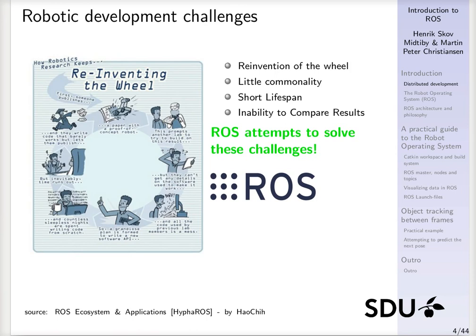The basic issue with how robotic development has been running earlier is demonstrated in the circle over here, where someone publishes a paper about a robot and some software they have made. Others find this of interest and would like to redo some of the experiments or maybe extend it, but it's hard to figure out how the software should be used. So they try to build it from scratch, a lot of time goes, and at some point time runs out and they commit a new paper.